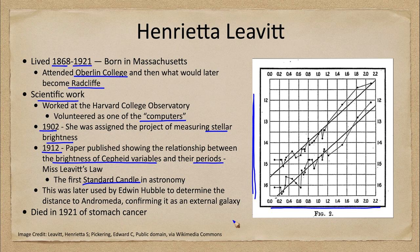That lets us determine the distance to these objects. The period is something very easy to measure — you simply observe the Cepheid over days, weeks, or months depending on the period length. Once you measure the period, you can read off the luminosity from the period-luminosity relationship. Knowing both the intrinsic luminosity and the apparent brightness allows us to determine the distance.